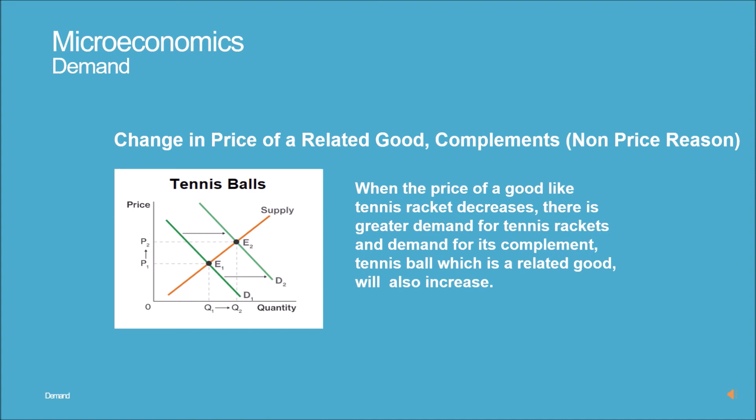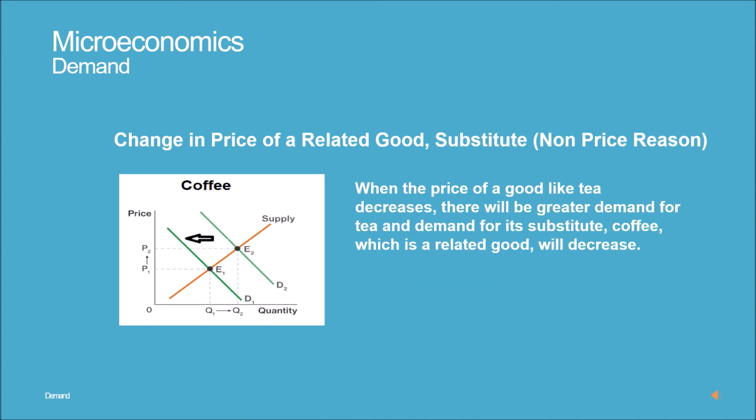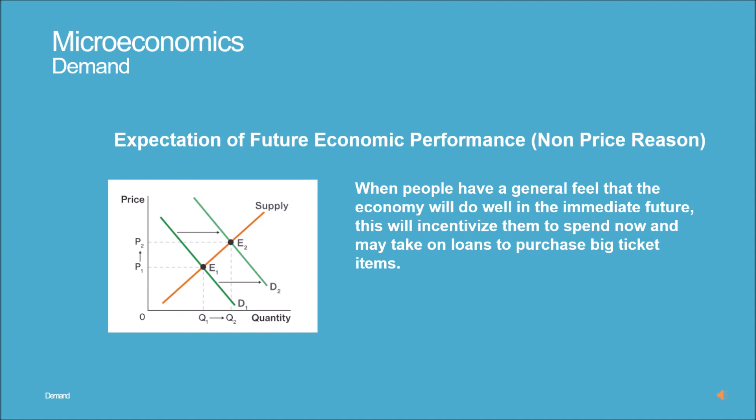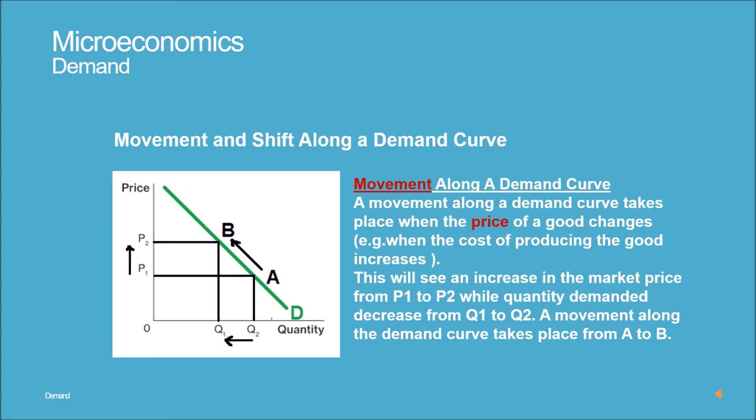Demand for its complement, the tennis ball, which is a related good, will also increase. When the price of tea decreases, there will be greater demand for tea, and demand for its substitute, coffee, will decrease. When people have a general feeling that the economy will do well in the immediate future, this will incentivize them to spend now and may take on loans to purchase big ticket items.